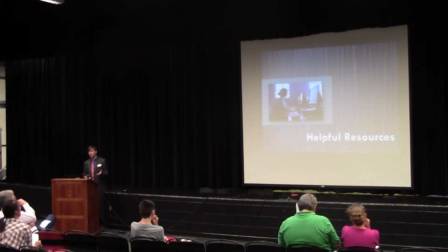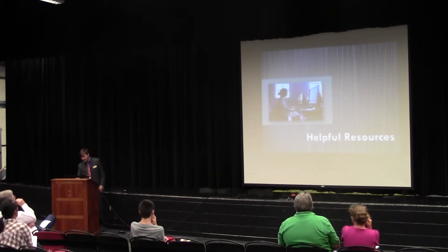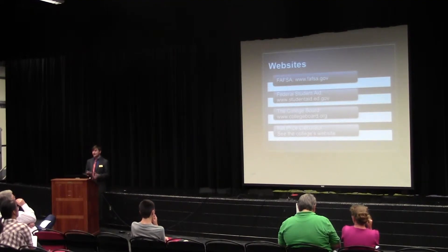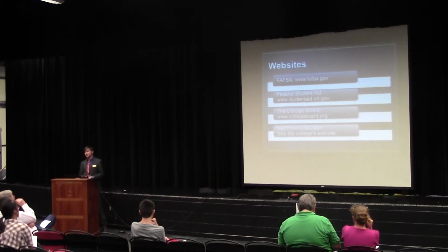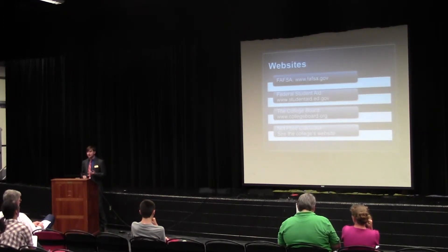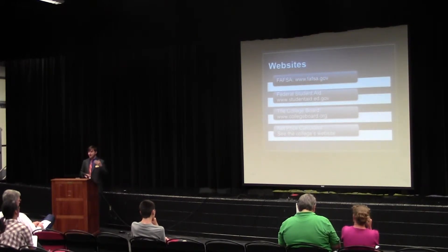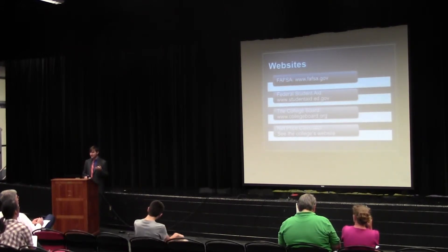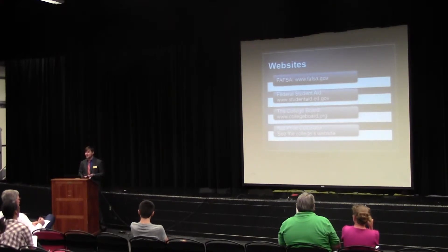Here are some local resources for applying for financial aid. FAFSA.gov is where you go to do the FAFSA. Federal Student Aid is the part of the Department of Education's website where, if your student decides to accept their loans, they need to sign a master promissory note — basically a promise that they will repay the loans — and complete entrance counseling, which walks a student through what it means to take a loan, what repayment will look like, and informs them of their decision. The College Board website is where you complete the CSS Profile if required by the schools your student is applying to.